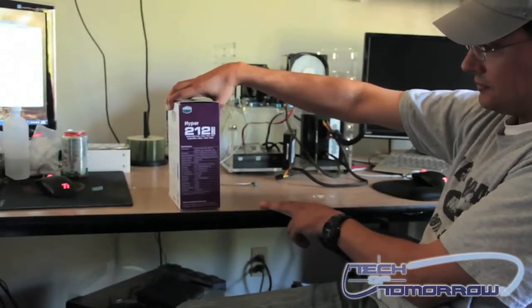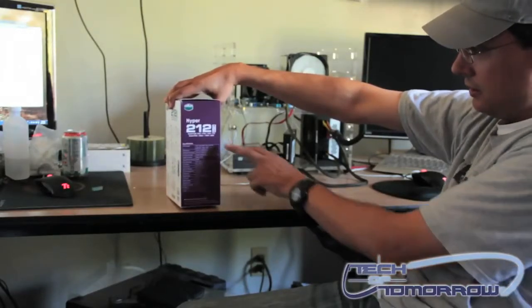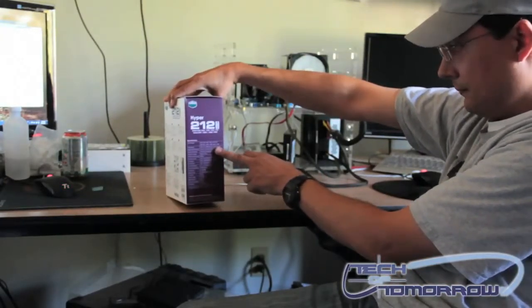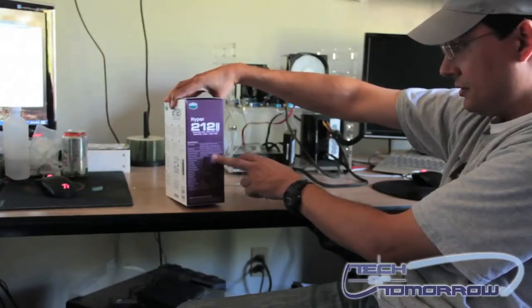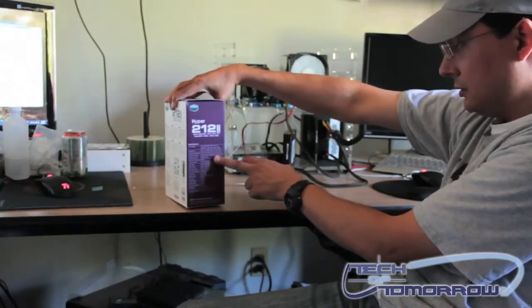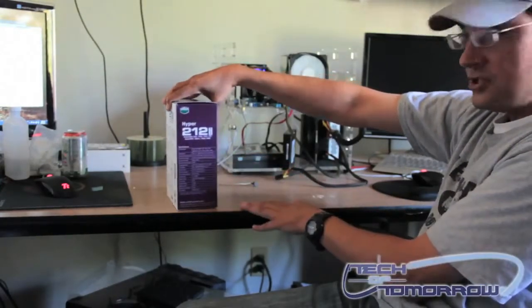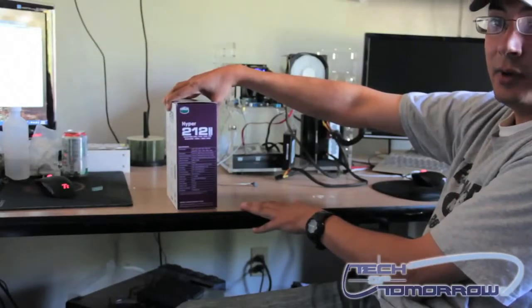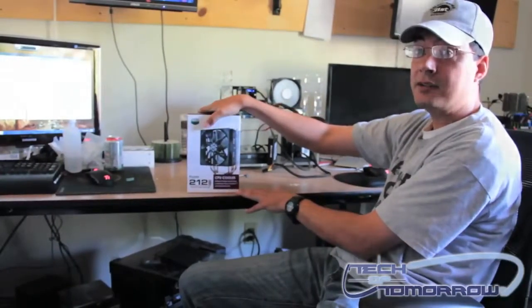And you've got all kinds of specifications here on the side. Sockets, dimensions, heat sink dimensions, materials, the weight. So, lots of information on the side of the box as well. Let's go ahead and open it up and take a look at what we've got inside.